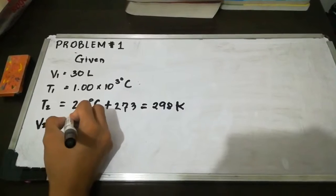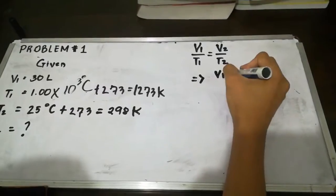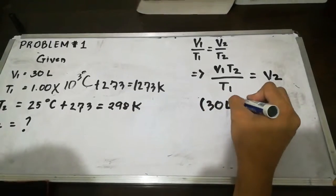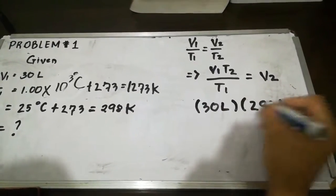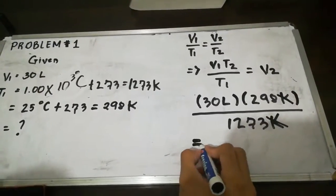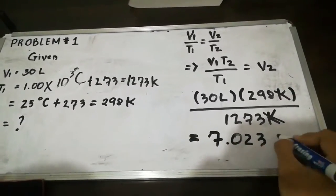We can solve the final volume by multiplying T2 on both sides so that the remaining value is V2. Substituting the values in the equation and calculating, the final volume is 7 liters as the final answer with 1 as the least significant figure.